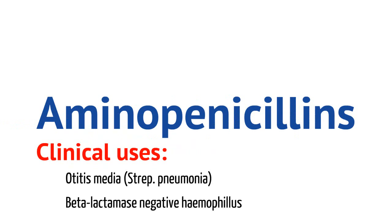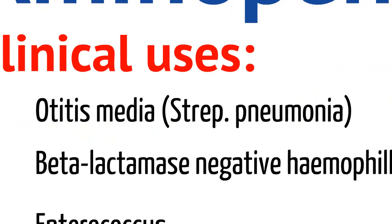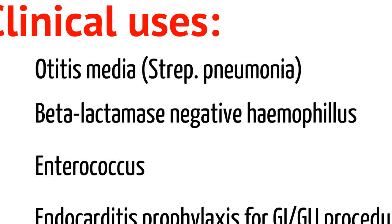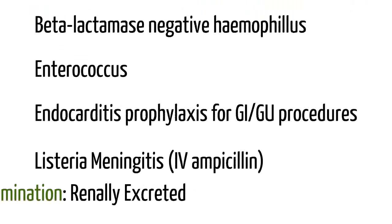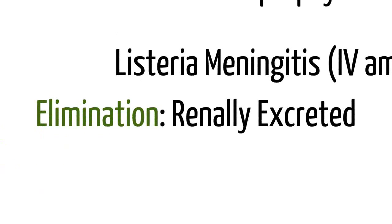The clinical uses of aminopenicillins are important. We commonly use amoxicillin and ampicillin for otitis media due to strep pneumonia, beta-lactamase-negative Haemophilus infections, infections with enterococcus, and occasionally for endocarditis prophylaxis in patients undergoing GI or GU procedures. Listeria meningitis is also covered with IV ampicillin. Remember we also use vancomycin and a cephalosporin for broadly covering meningitis. Aminopenicillins are eliminated renally and must be adjusted if acute kidney injury is present.